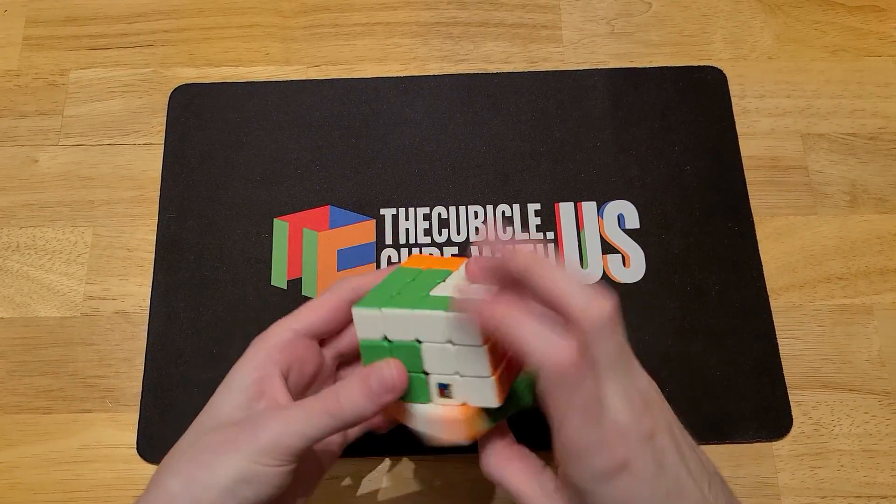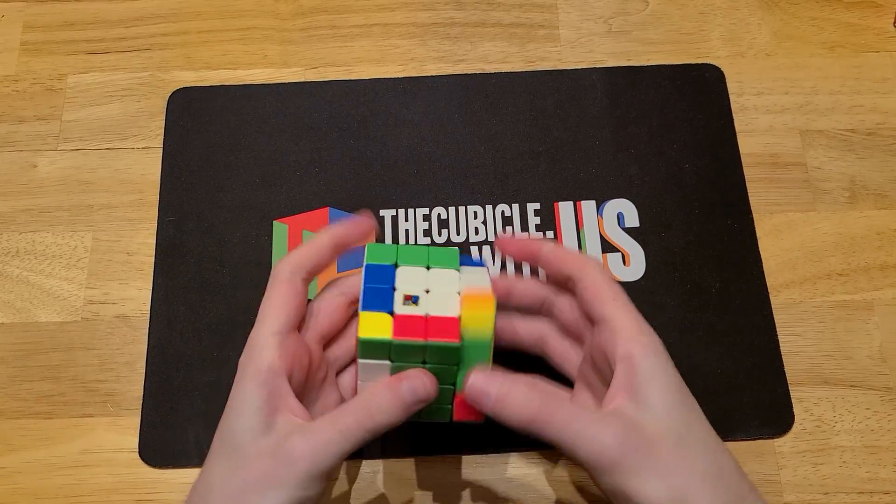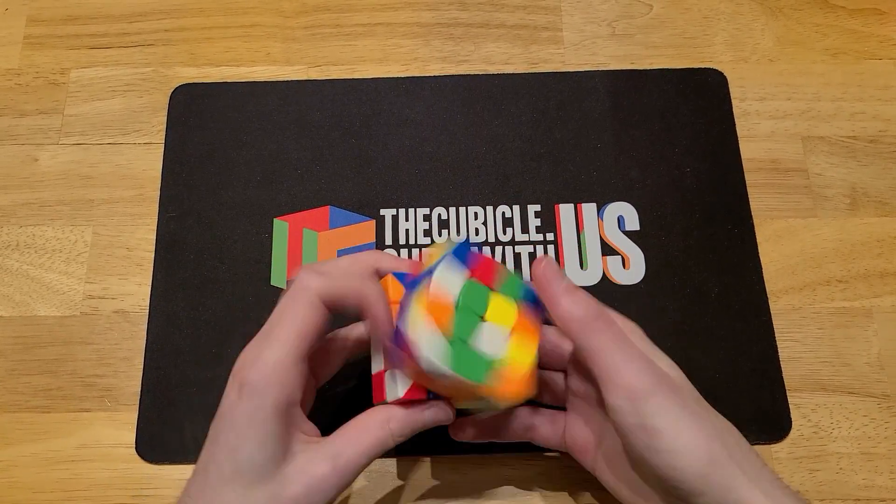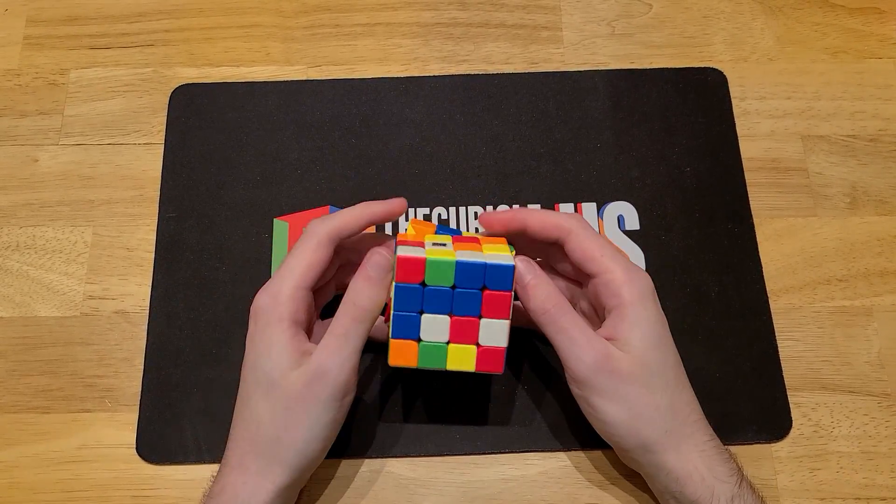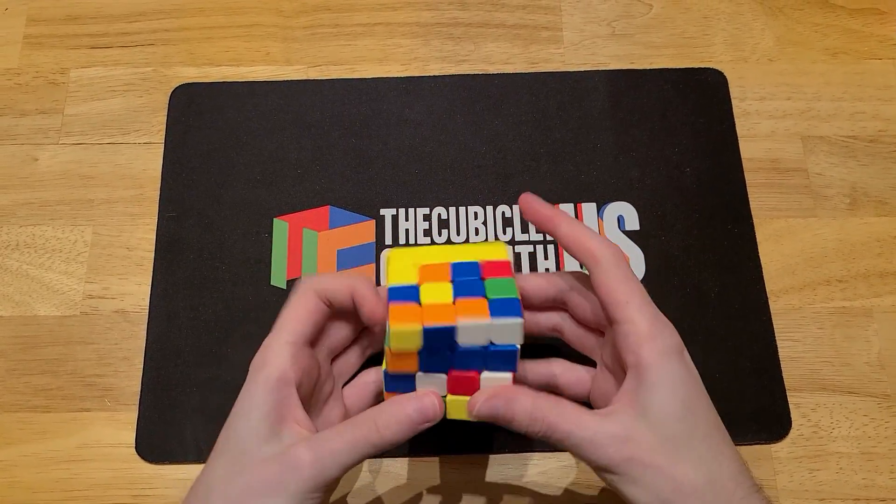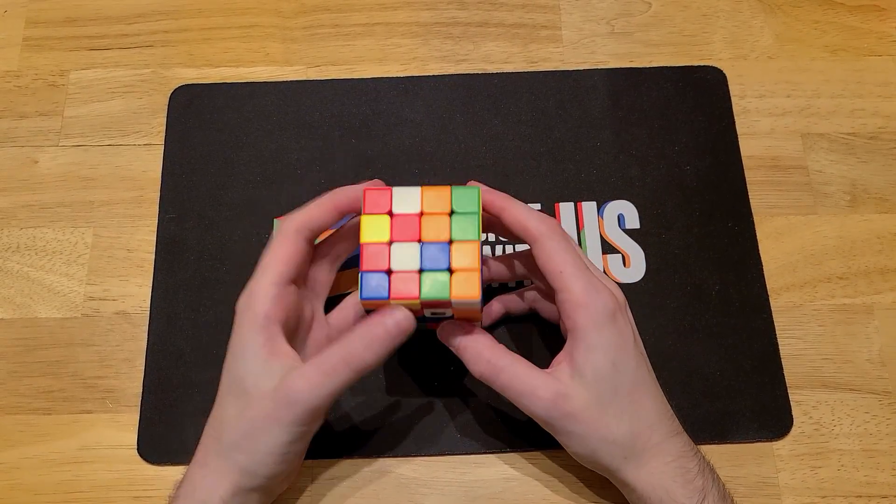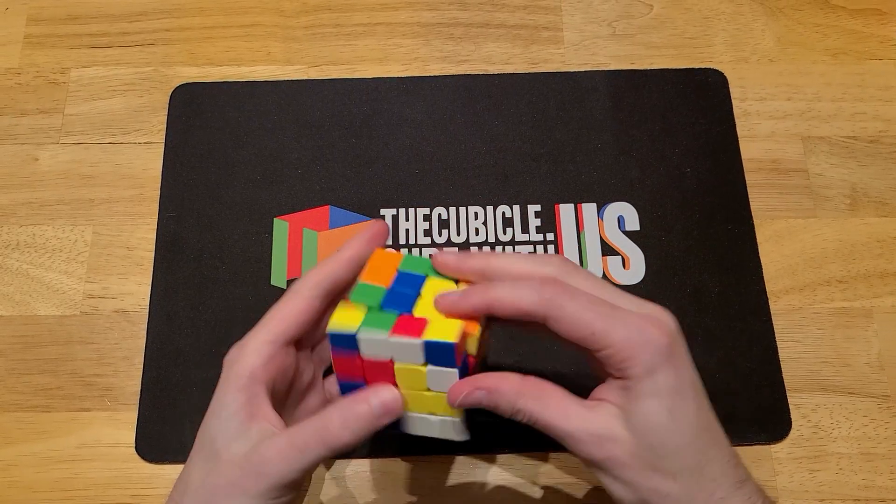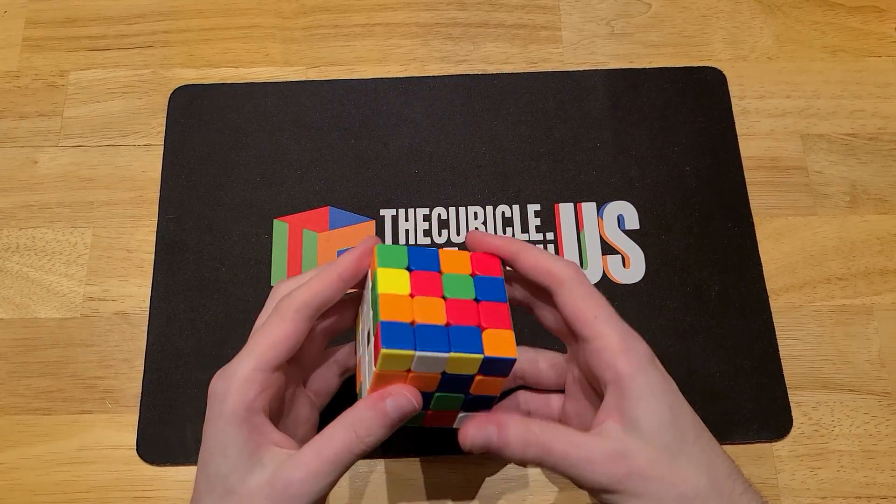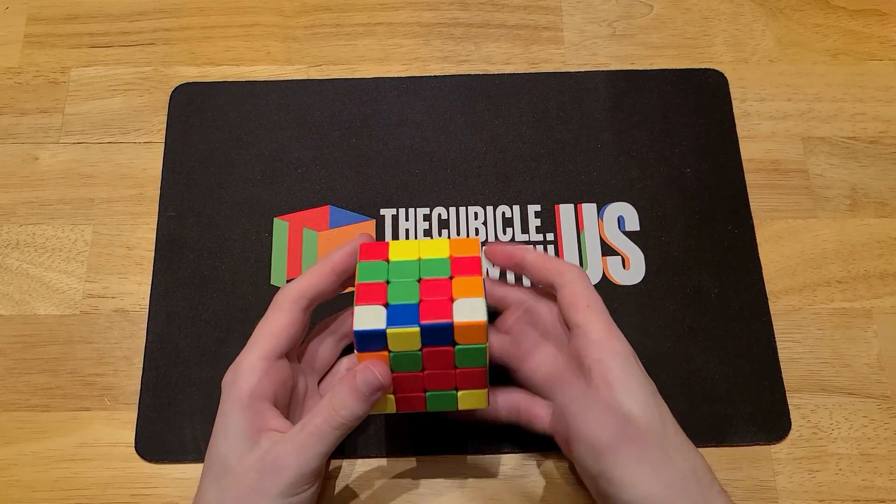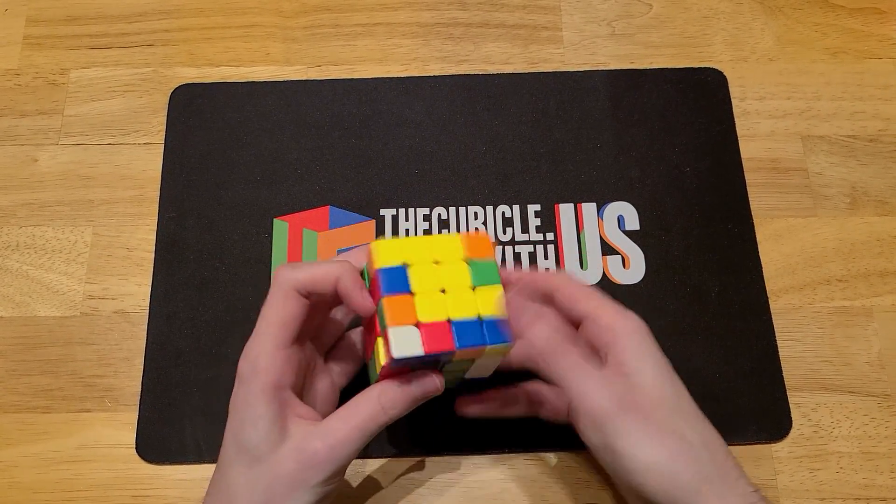Oh, nice. Okay. Huh. I actually like the turning on this quite a bit. This 4x4 is pretty flexible compared to the other budget models. Usually, the budget models are pretty rigid, but this one, it seems, you know, quite flexible. I'm not sure if that'll result in more lockups, but I think it allows the cube to be a little more adaptable. You can adapt it to more turning styles.